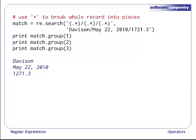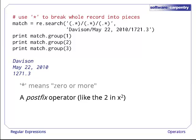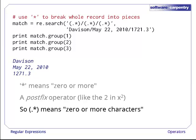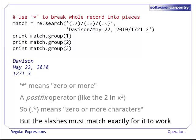Our first attempt to parse this data relies on the star operator. Star means zero or more repetitions of the pattern that comes before it. It is a postfix operator just like the two in x squared. So dot star means zero or more characters because dot matches any character and star forces the preceding pattern to match zero or more times. In order for the entire pattern to match, the slashes have to line up exactly because slash matches against itself. And that is why this seems to grab the site name, the date, and the reading correctly.